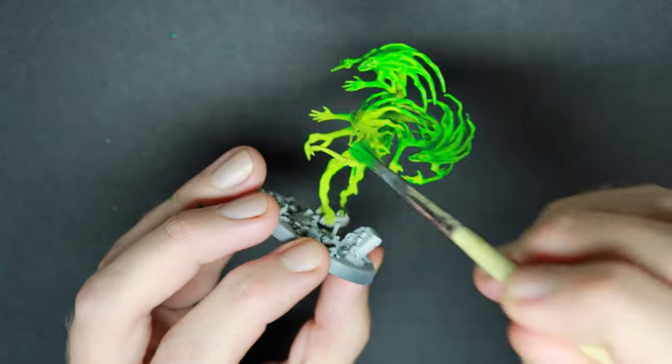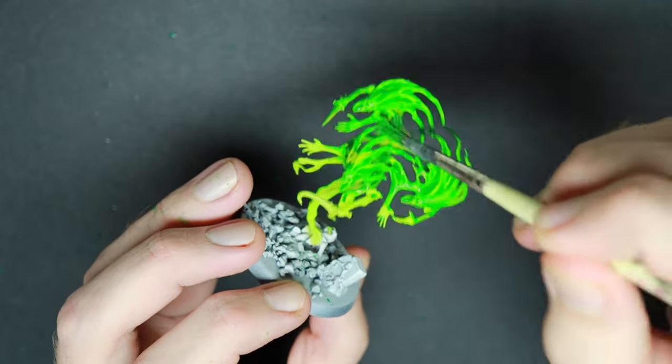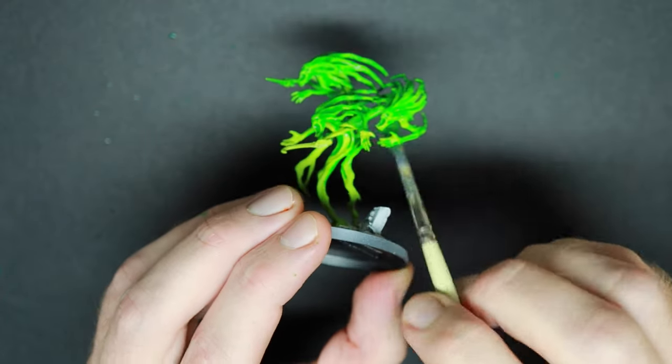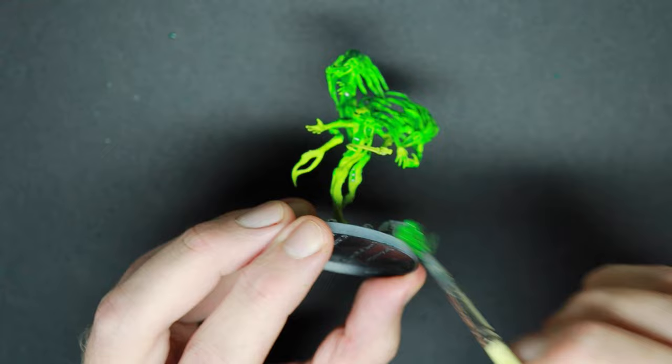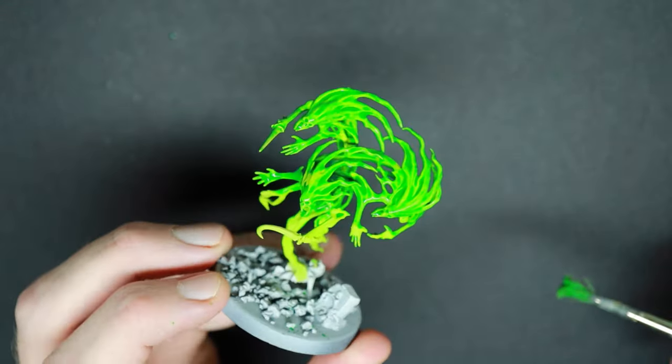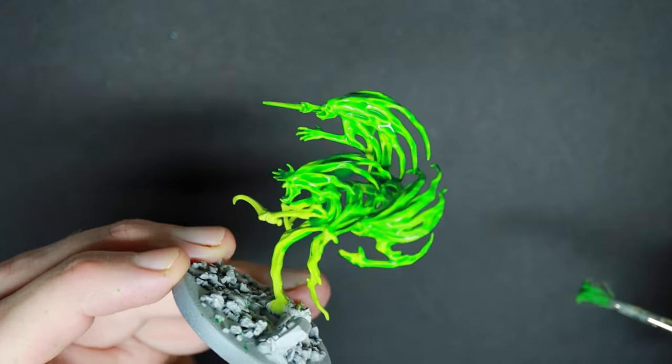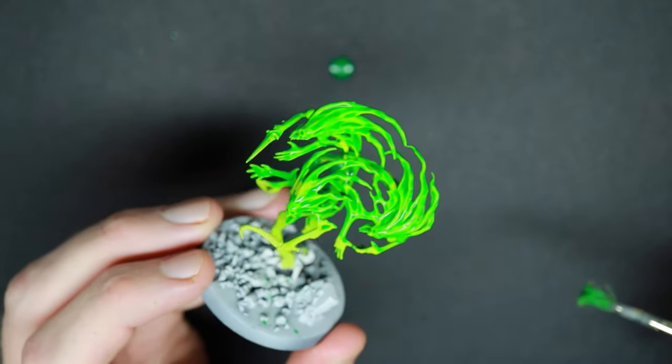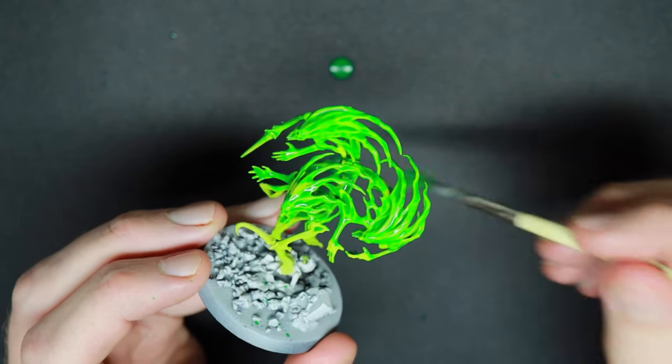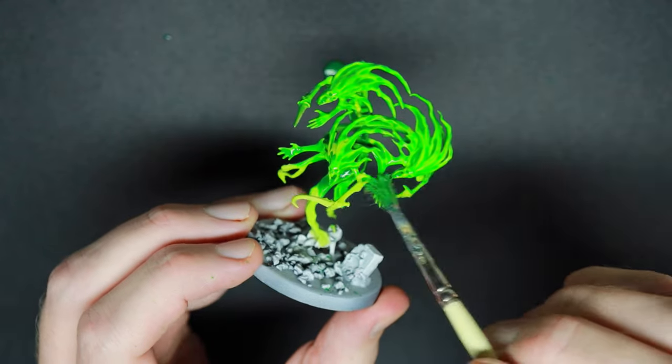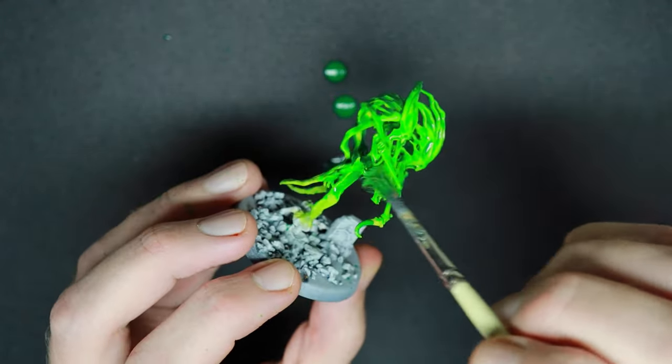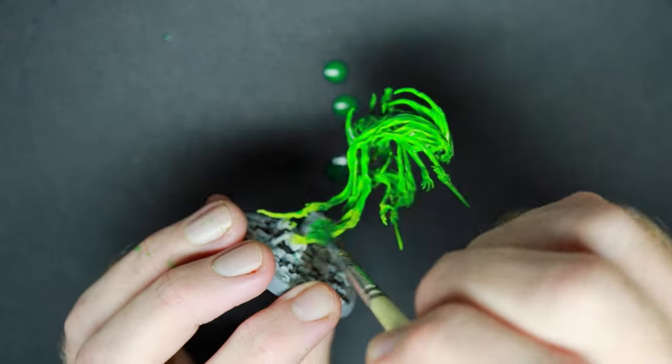So now we just cover the entire miniature and let the paint do its job. This is a fairly easy way because we don't have to be very careful since it's going over basically the entire model except the base of course. Again, this is not a very interesting process. You can see how bright it is in the video. You can hardly film it. But I will finish this and get back to you.